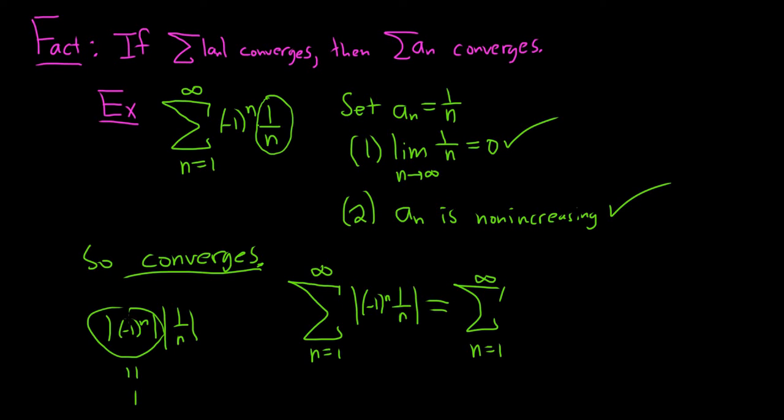And then so this piece here is just 1. The reason is, negative 1 to the n is 1 of two values. If it's 1, you get the absolute value of 1, which is 1. And if it's negative 1, you get the absolute value of negative 1, which is also 1. So in any case, you get 1.